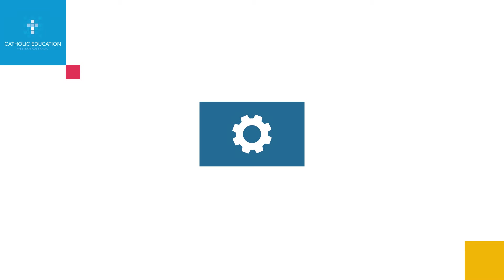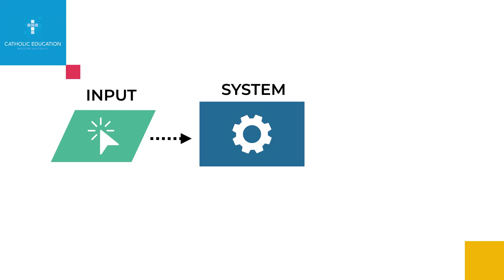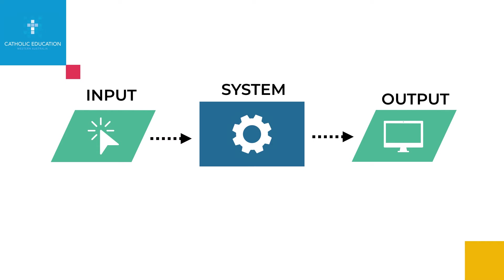So if we look at our system, we have the inputs and the outputs. This is the simplest level that we would look at a system. The inputs would allow you to input information from the outside world through keyboards, cameras, or microphones. And then we can output through monitors, speakers, printers, and projectors. Inside the system all this information is processed.